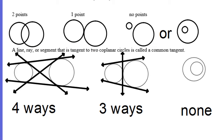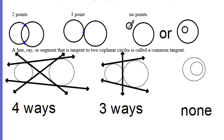Now we're going to talk about different properties of circles. If I have two circles, they can intersect in three different ways: they can intersect at two points, which kind of looks like a Venn diagram; they can intersect at one point, when they just touch in the middle; or they cannot intersect at all, where both circles are off in their own space, or one circle is inside another with no points of intersection.